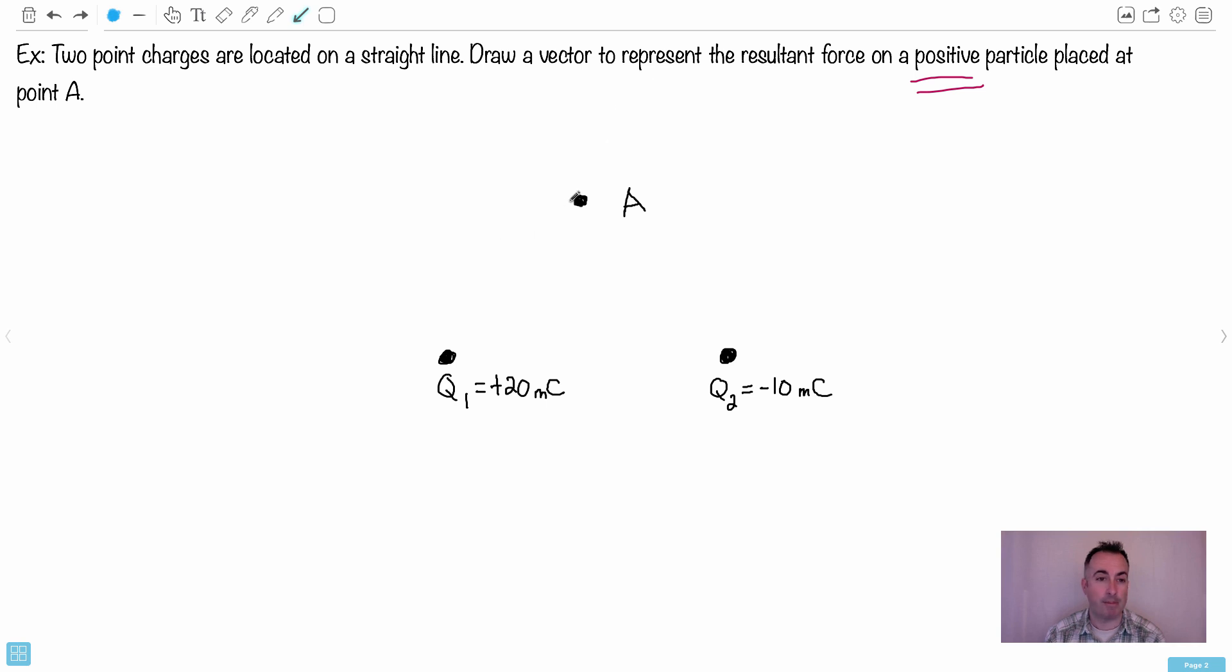So if there's Q1, and remember, it's a positive particle. So A is a positive particle. Do you think a positive, then, will be attracted to or repelled by Q1? I hope you know that like charges repel. So it's going to go away from it. Now, I don't know how big to make it. I'm going to just choose sort of a random length. I'm going to make it going away.